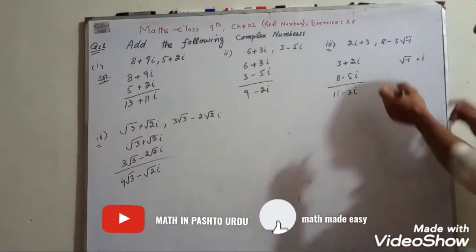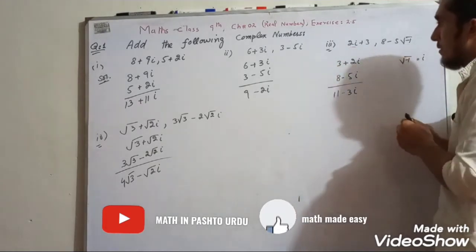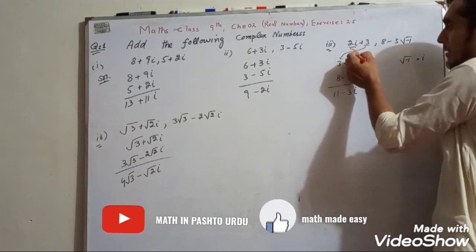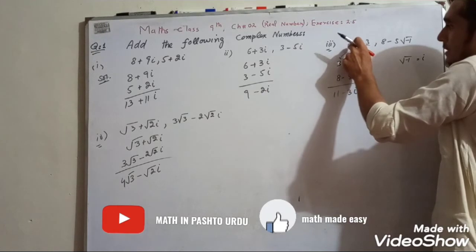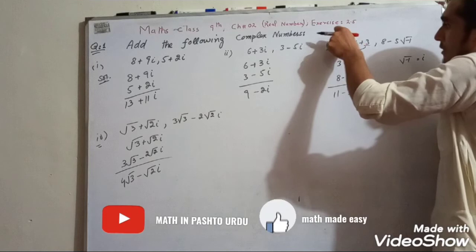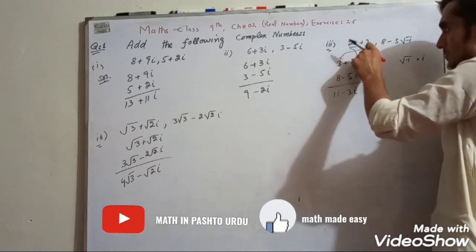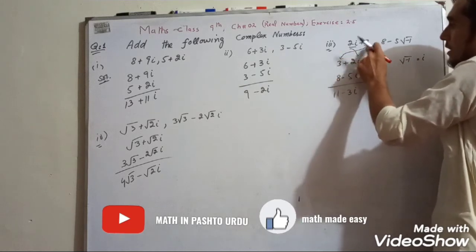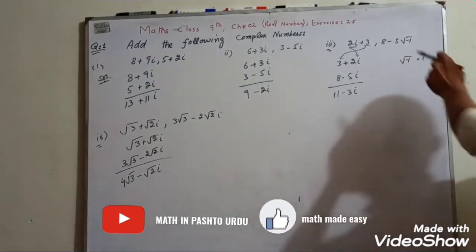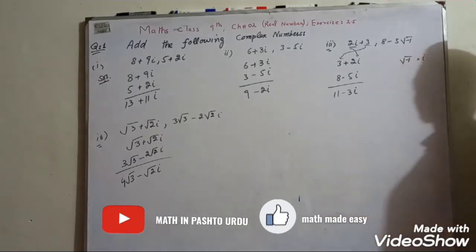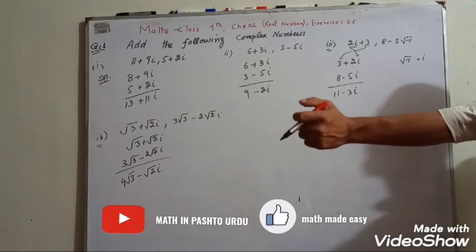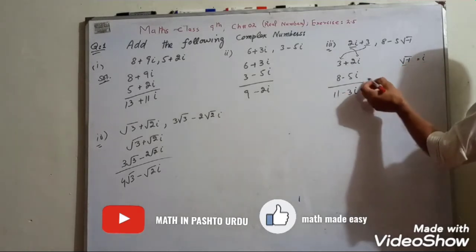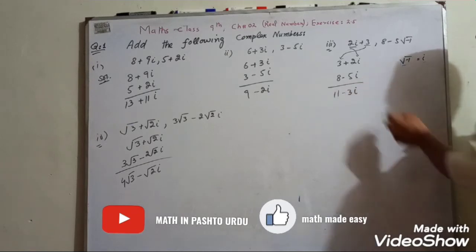Here it is written that 2 iota plus 3. Here 2 iota is imaginary and 3 is real part. We write imaginary part last and real part first: 3 is real part, 2 iota is imaginary part. Then 8 minus 5 root of minus 1. Since iota equals root of minus 1, we replace root of minus 1 by iota and write 3 plus 2 iota.